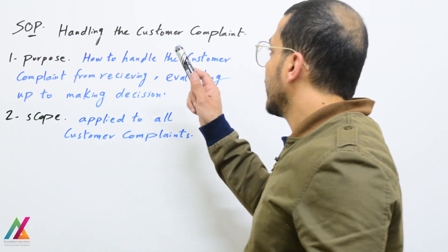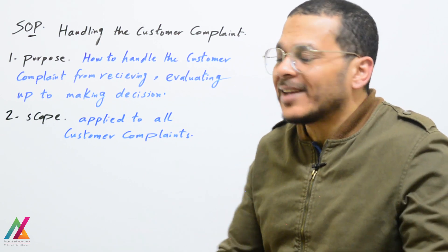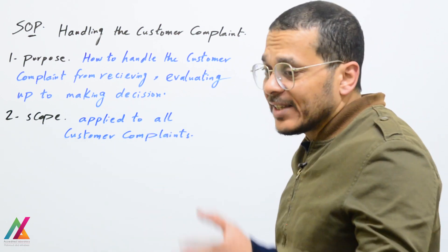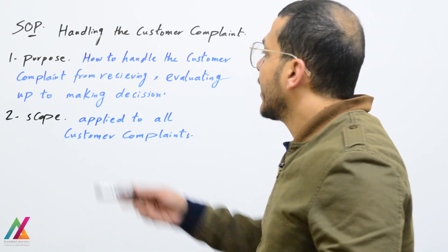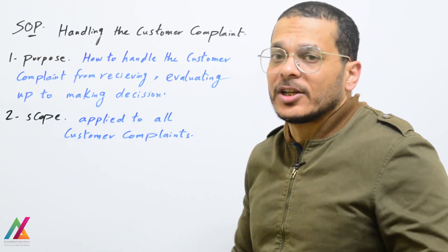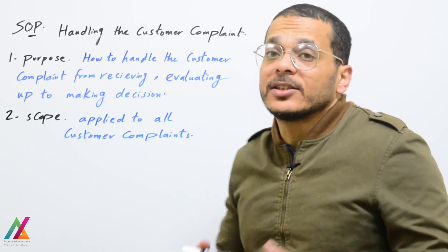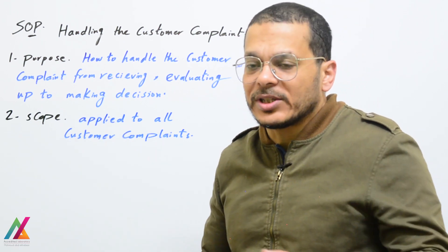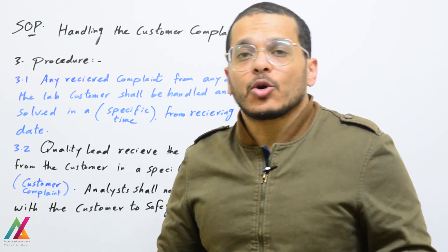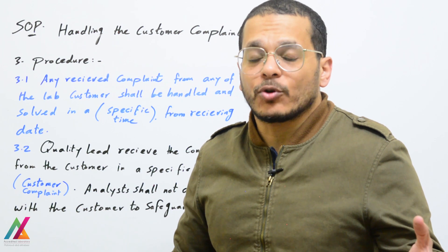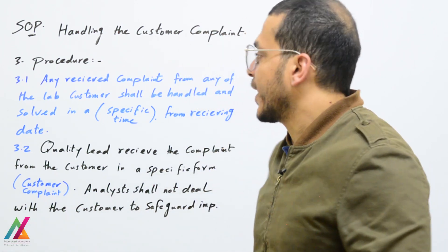The SOP for handling customer complaints has the following purpose: how to handle the customer complaint from receiving and evaluating or investigating the complaint up to making a decision on how to solve the issue. The scope applies to all customer complaints without any exception. In the procedure, you will find the process for handling the complaint from receiving it from the customer up to giving the complete or full report to the customer.